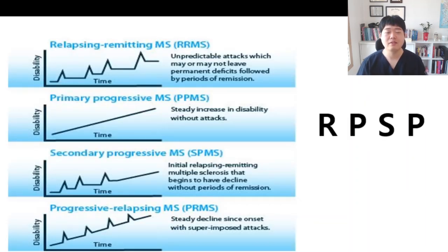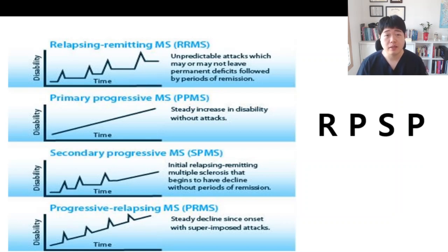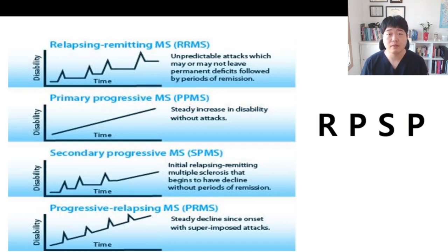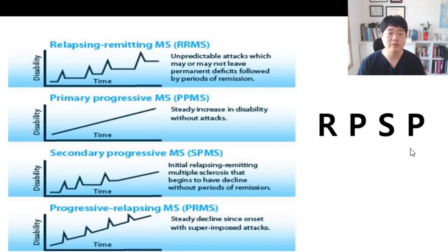It is a quite confused topic when you're faced with questions here. How do you distinguish between those 4 different types of multiple sclerosis? Multiple sclerosis is a demyelinating disease in which the insulating covers of nerve cells in the brain and spinal cord are damaged. I try to memorize them as R-P-S-P, which is an initial spelling that you can easily understand and easily memorize.